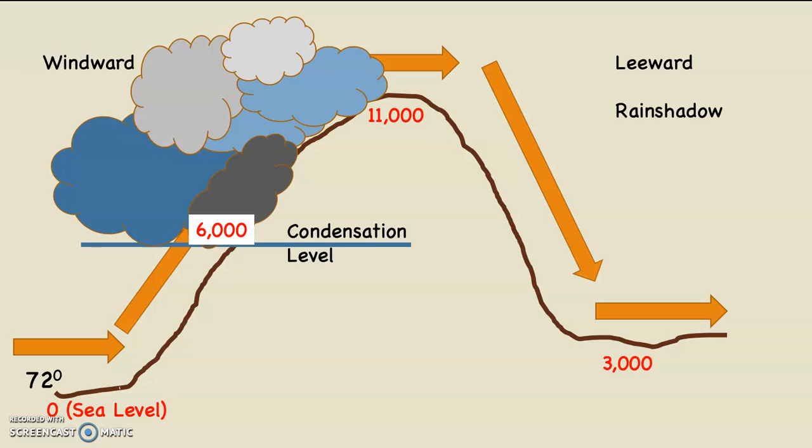We need to figure out which rates to use to calculate temperature change in this vertically moving air parcel. From sea level up to 6,000 feet on the windward side, is there a cloud forming? No — when air rises with no cloud forming, the relative humidity is less than 100%, so we use the DAR: 5.5 degrees Fahrenheit per 1,000 feet. From 6,000 feet up to 11,000 feet, a cloud is forming, so relative humidity is 100%; we use the WAR: 3.3 degrees Fahrenheit per 1,000 feet. The air then descends from 11,000 down to 3,000 feet — every time air subsides, we use the DAR. In the next video, we do the math.